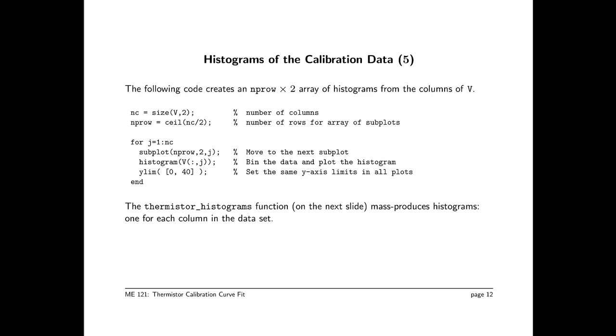Here's a simple bit of MATLAB code that does that. As before, nc is size v2. So we've extracted the number of columns. We make a calculation here. nprow is nc divided by two. That's the number of columns divided by two. So to be safe, we use the ceil command, which is round up. So we're going to get a value of nc divided by two, and then we're going to round up in case the last row is not full. The simple loop, as before, we're going to loop over the number of columns. Before we compute the histogram, we're going to issue the subplot command. And notice the last argument of the subplot command is j. So that allows us to step through the individual data sets of the individual histograms.